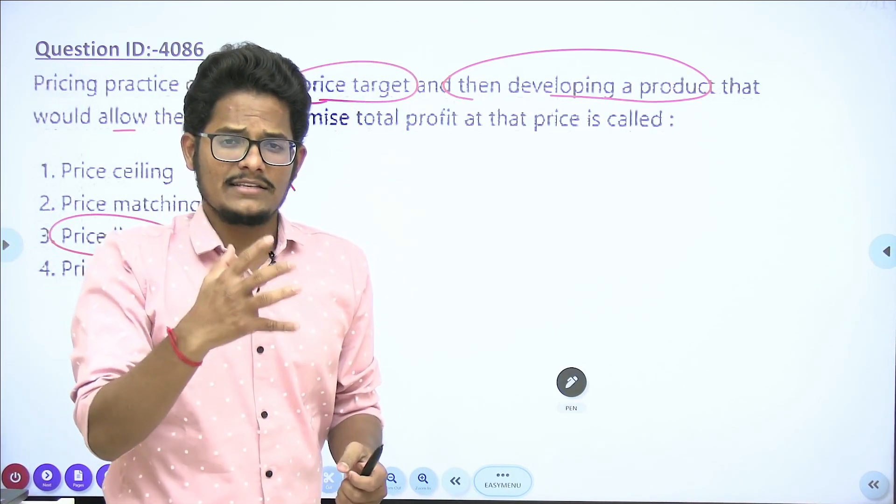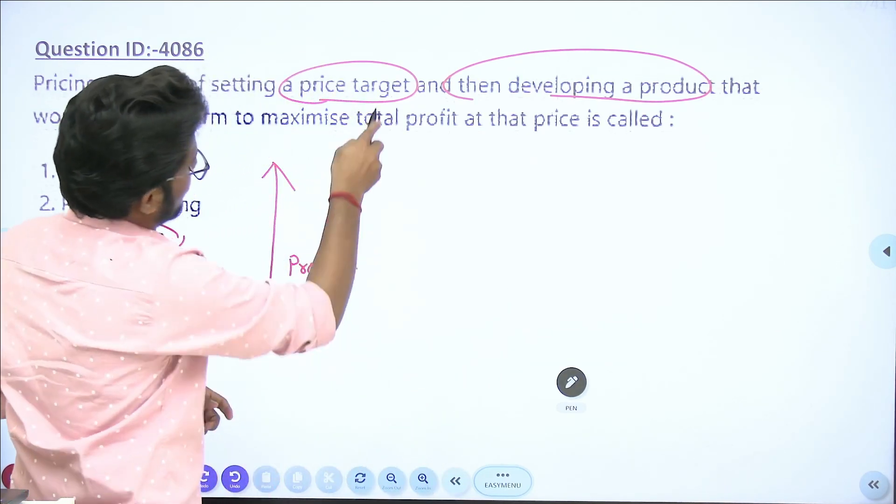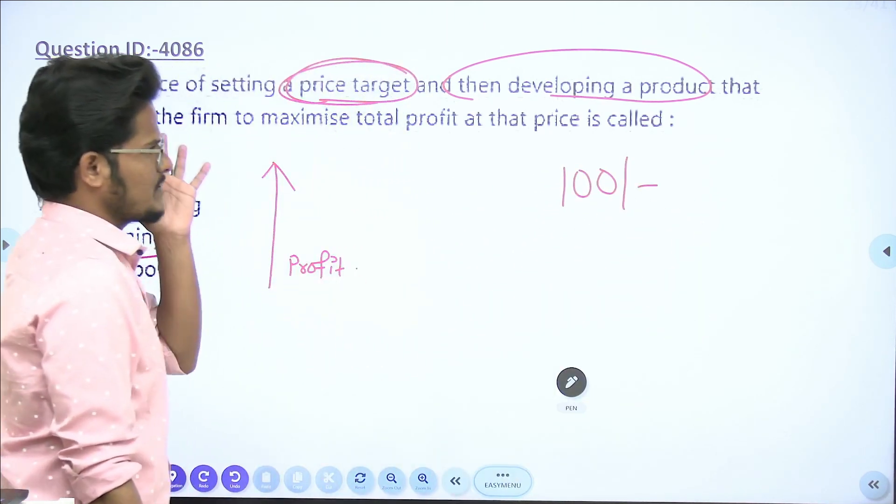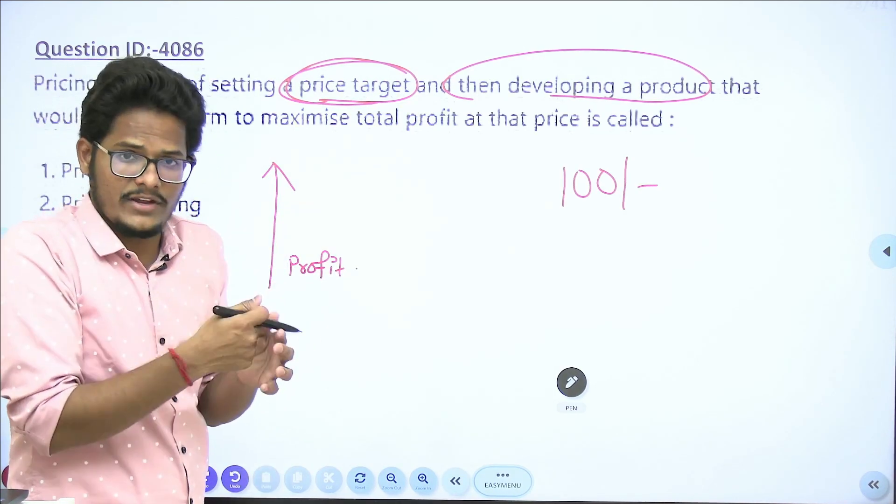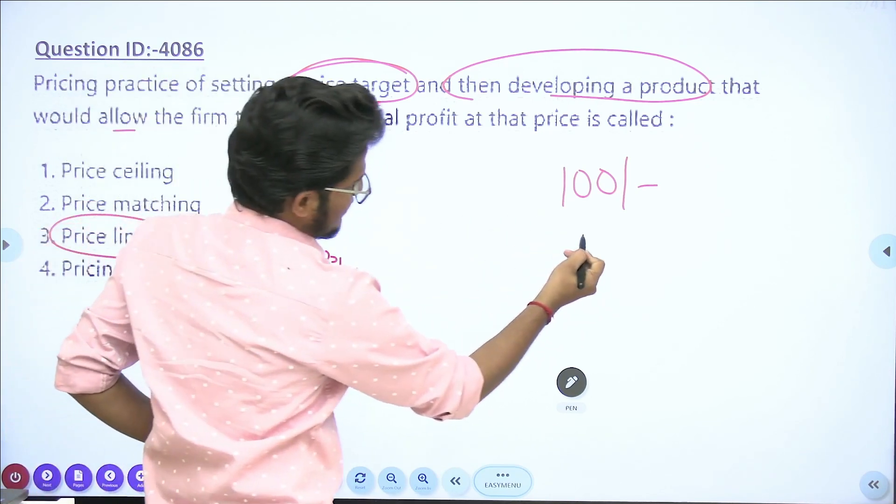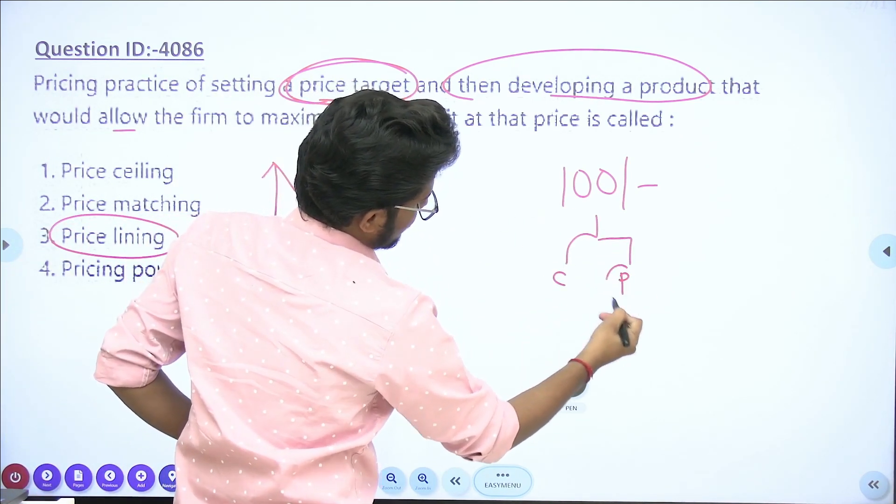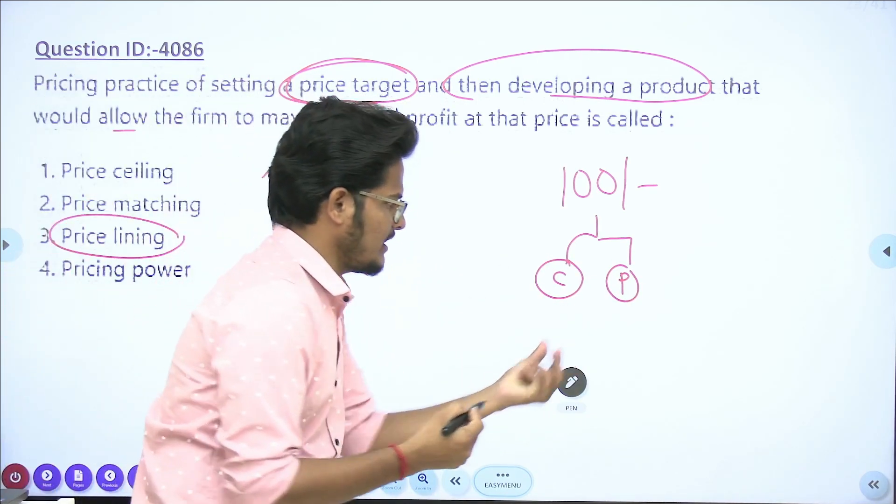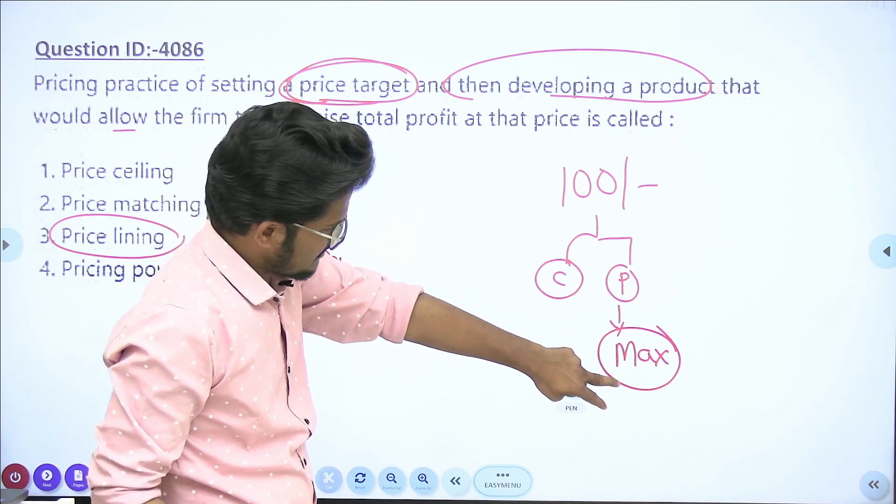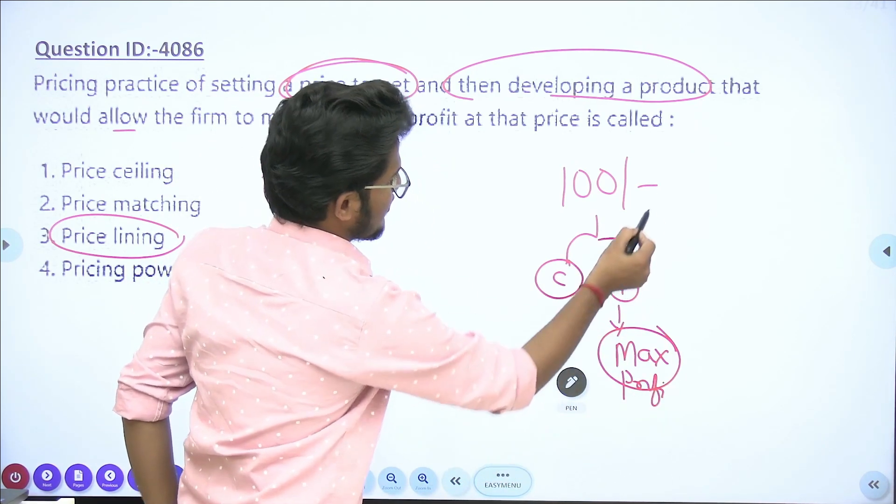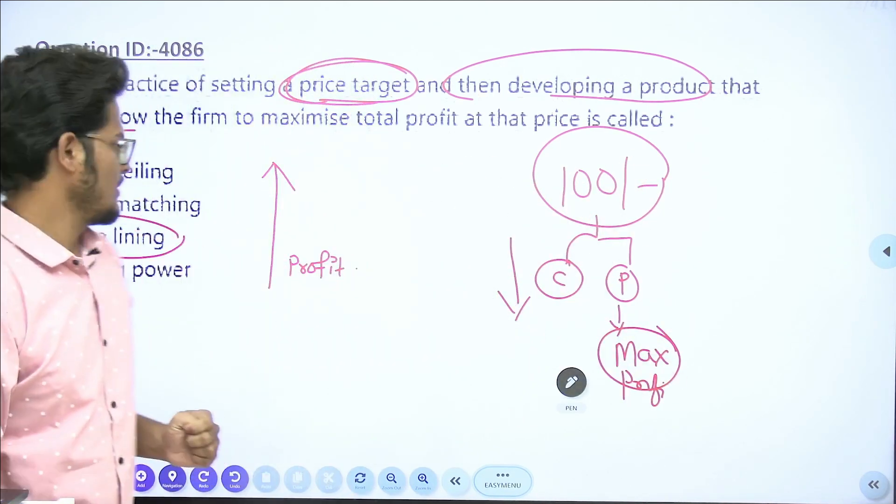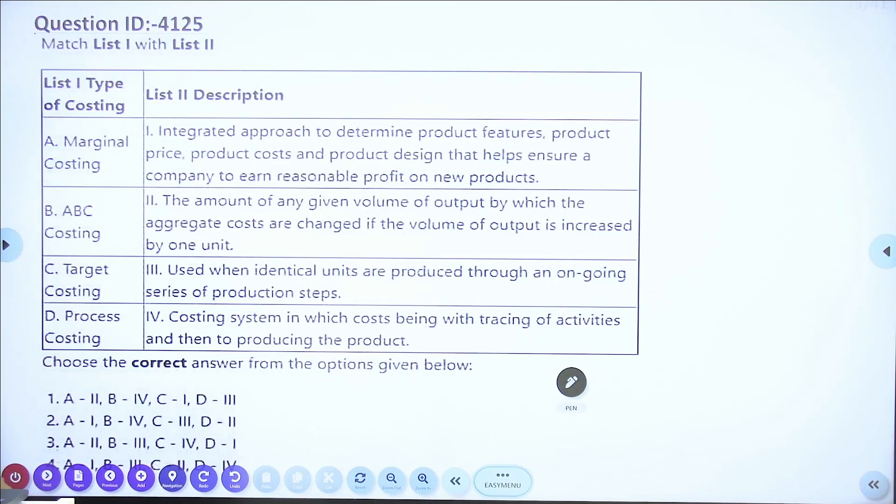Price lining means price is lined up in such a way that with a target price, suppose my target price is to fix 100 rupees per unit, I will develop the product by incurring my cost less than 100 rupees so that my cost and profit element both will be there, and profit should be maximum at this price. By keeping this in mind, I am trying to fix this target price.